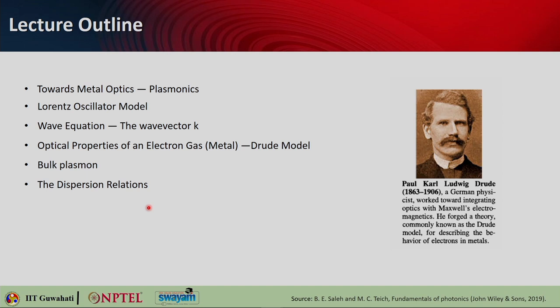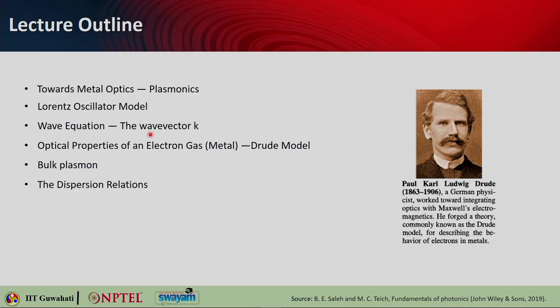Here is the lecture outline. We will be covering metal optics or plasmonics very briefly. The relevant models to explain the properties of metal will also be covered. We will be discussing the Lorentz oscillator model, the wave equation and wave vector k. We will look into the optical properties of an electron gas using the Drude model. Here is a picture of Paul Karl Ludwig Drude, a German physicist who worked towards integrating optics with Maxwell's Electromagnetics. He formulated a theory commonly known as the Drude model that describes the behavior of electrons in metal. We will also look into bulk plasmon and different dispersion relations.